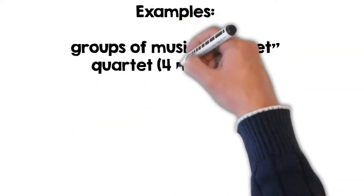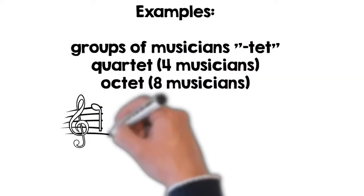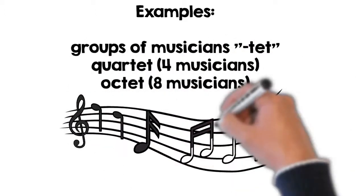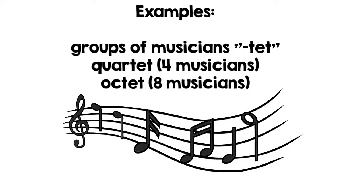Here are some examples. A group of musicians is a tet. If you know that the word quart means four, then you know that a quartet has four musicians. If you know that octa means eight, then an octet would have eight musicians.